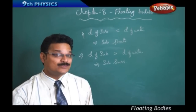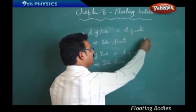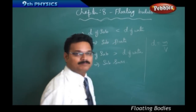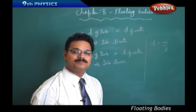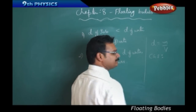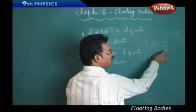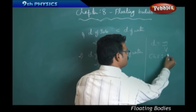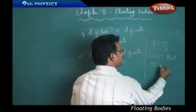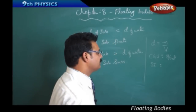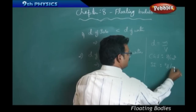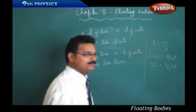Let me tell you the unit of density. Density equals mass divided by volume. In CGS units, mass is in grams and volume is in cubic centimeters, so the unit is grams per cubic centimeter. In SI units, mass is in kilograms and volume is in cubic meters, so the unit is kilograms per cubic meter.